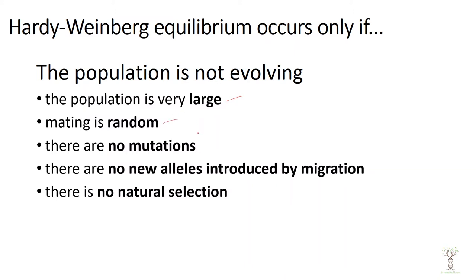Mating has to be random, which we know in the animal world is usually not the case — plants will have random mating. There are no mutations, because DNA mutations can create new alleles that alter allele frequencies. No new alleles can be introduced through migration, so the population has to be isolated, and there has to be no natural selection occurring.